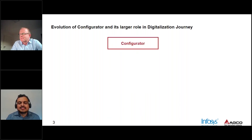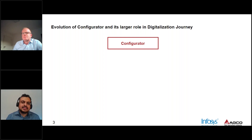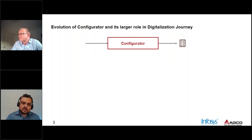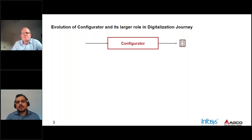In those early days, the configurator used to be a kind of a single fat box — a single standalone silo application which used to contain everything: all the data, all the rules, every piece of information sitting in one box. You would send some input to it, it would configure and output a configuration, potentially coupled together with pricing to produce a quote. And that was essentially its job, of course with a better UI, sometimes more user-friendly.